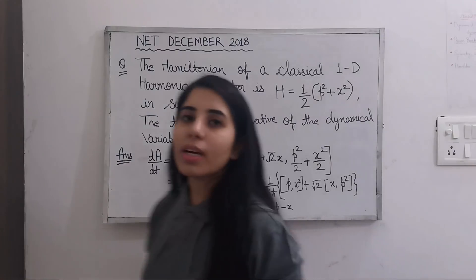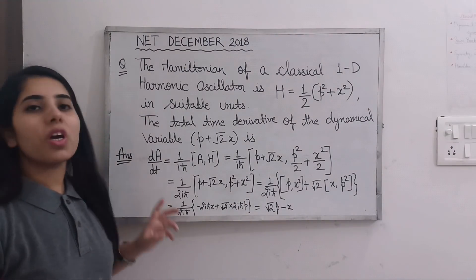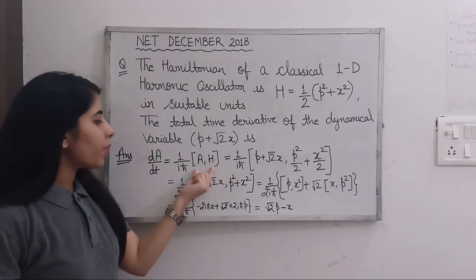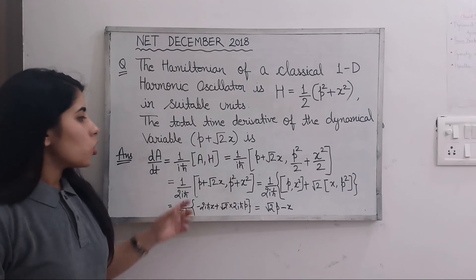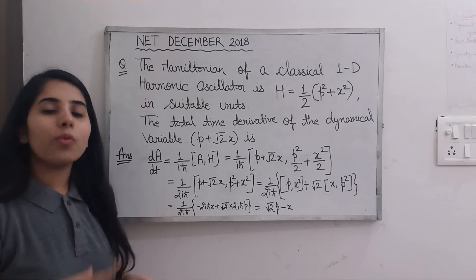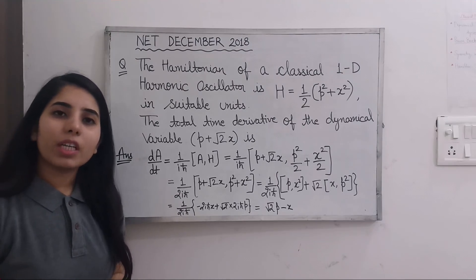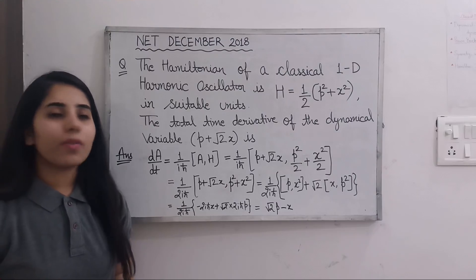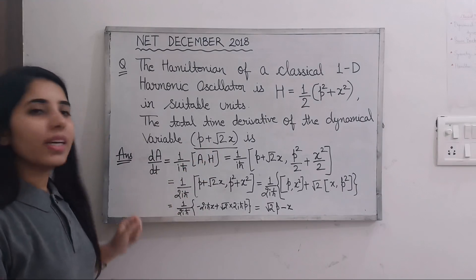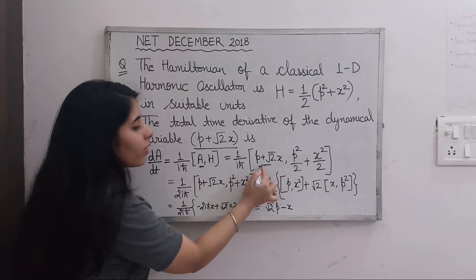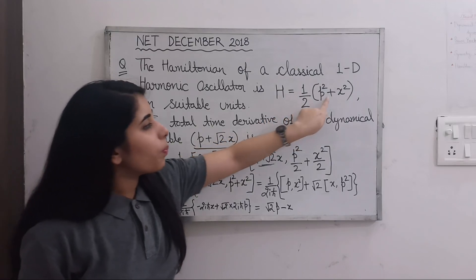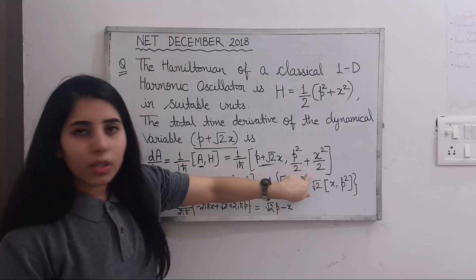Here we have the complete solution. Since ∂A/∂t vanishes, we are left with (1/iℏ)[A, H]. When we put the values of A = p + √2x and H = p²/2 + x²/2, we expand the commutator bracket. Now, [p, p²] = 0 and [x, x²] = 0, so those terms drop out. The remaining terms are [p, x²] and [x, p²].